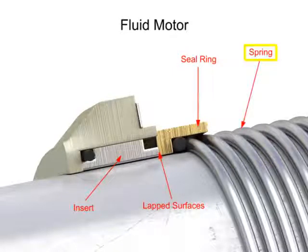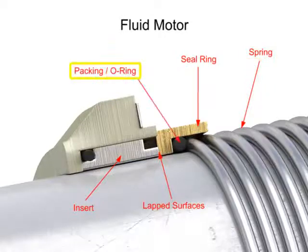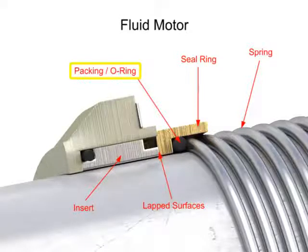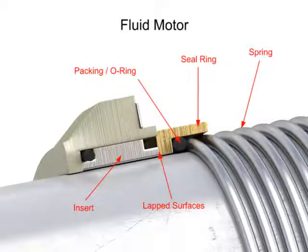A spring ensures that the seal ring presses tightly against the insert. A packing, or O-ring, ensures there is no leakage between the spring and seal ring. Internal hydraulic pressure ensures the two surfaces are held in tight contact, but even this method is not leak-tight, and weepage is a common occurrence.